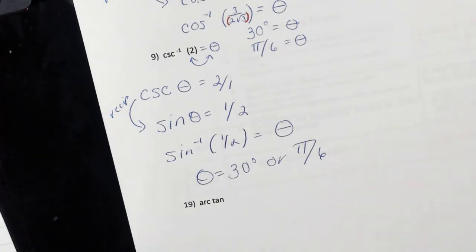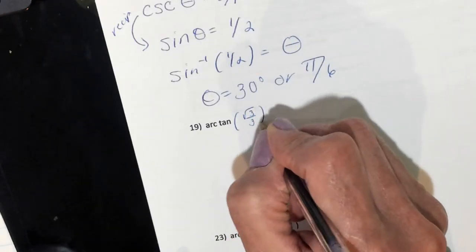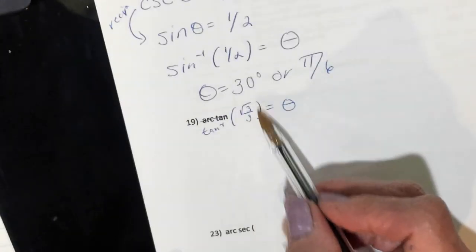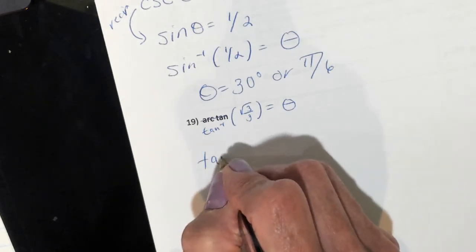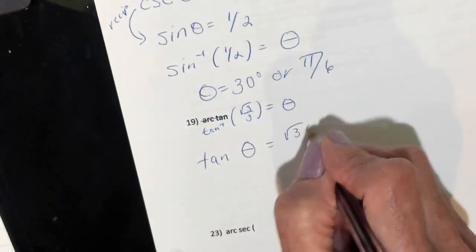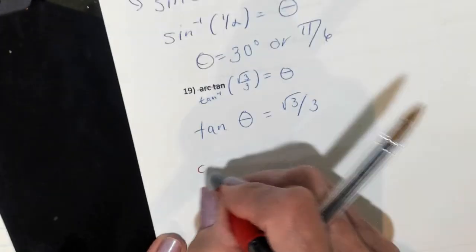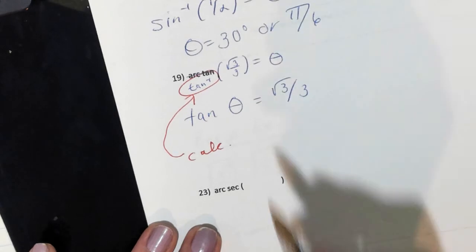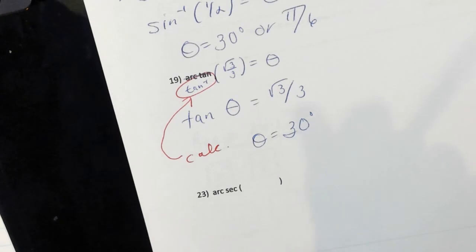Let's do two more. Number 19: arc tan of root 3 over 3 equals theta. Arc tan is the same as inverse tan, so: inverse tan of root 3 over 3 equals theta. We're thinking the tangent of what equals root 3 over 3. Put that in your calculator — if you're in degrees, you should be getting 30 degrees.